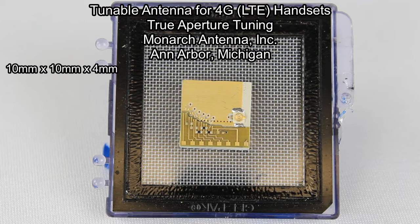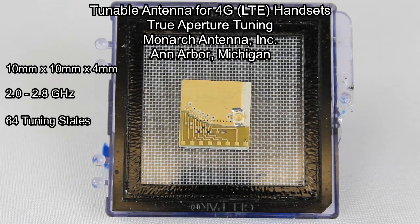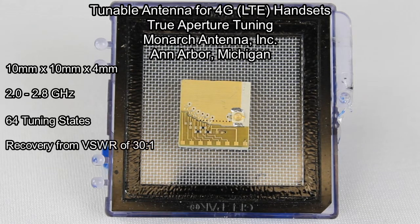It measures 10x10x4mm and features a frequency tuning range from 2 to 2.8GHz, 64 subbands selected by 6 independent DC control lines, true aperture tuning, and the ability to recover from severe detuning, or a VSWR of 30 to 1.